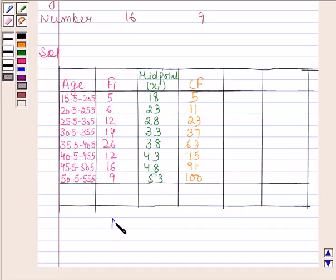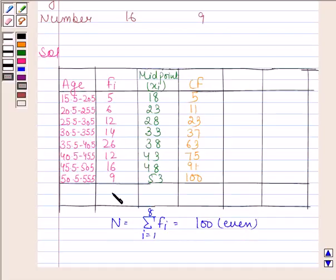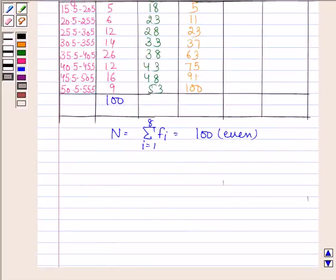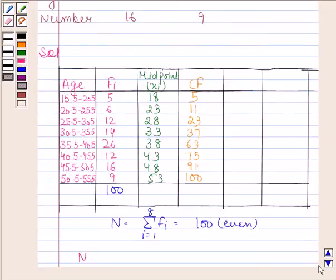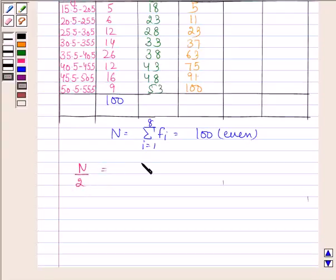Now we will find N. N is equal to the summation of all frequencies, where i goes from 1 to 8. On adding all these frequencies, we get 100. Now 100 is even, and we know that if N is even, then the median class is that class interval whose cumulative frequency is equal to or just greater than N/2. We find N/2 equals 50.